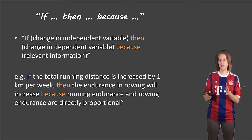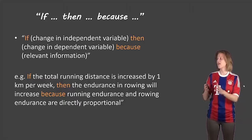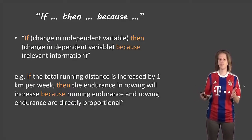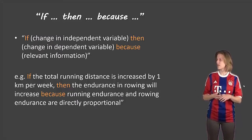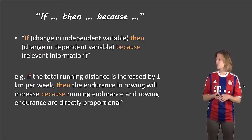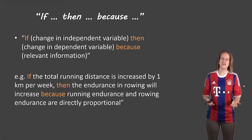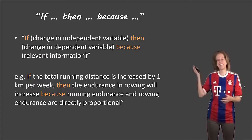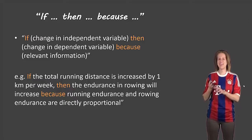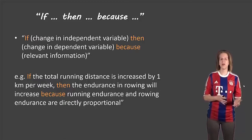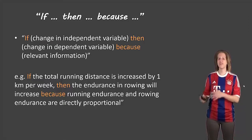The if-then-because format works like this: 'If' — you state the change in the independent variable. 'Then' — you state the change in the dependent variable. 'Because' — you state any relevant information. Here's an example: If the total running distance is increased by one kilometer per week, then the endurance in rowing will increase because running endurance and rowing endurance are directly proportional. You can see the if-then-because, with the independent variable, the dependent variable, and the relevant information all clearly stated.